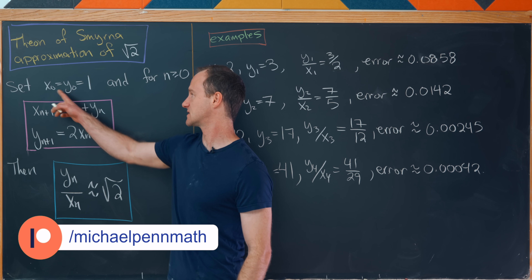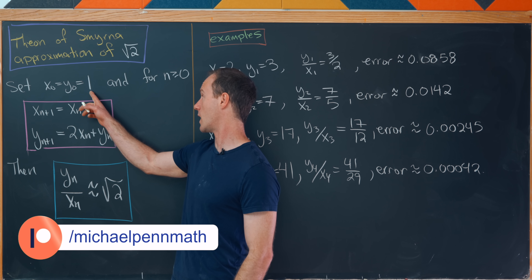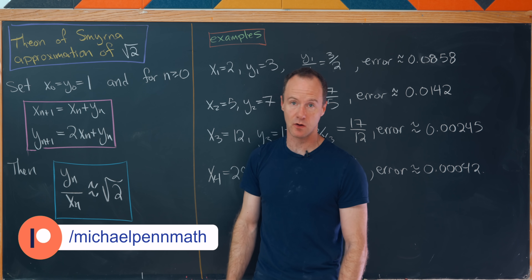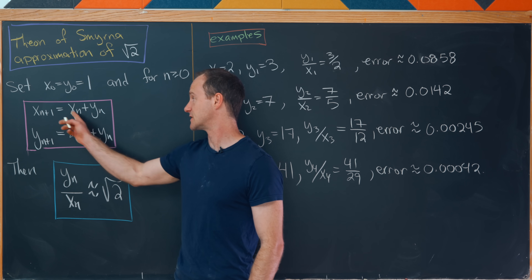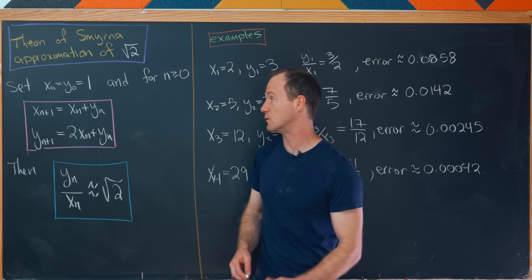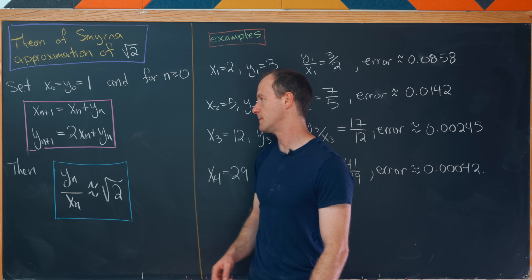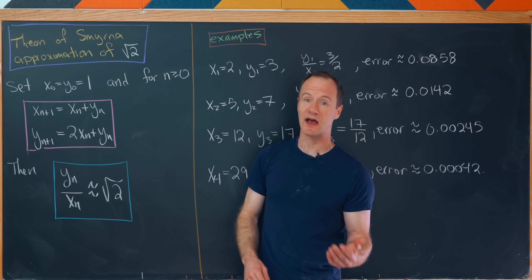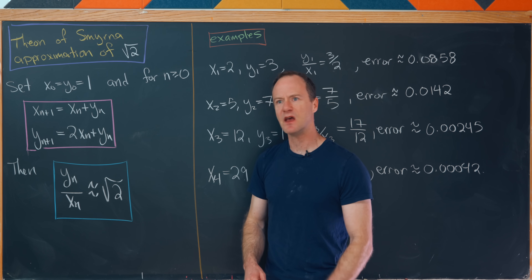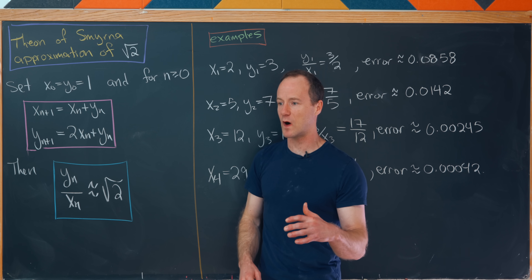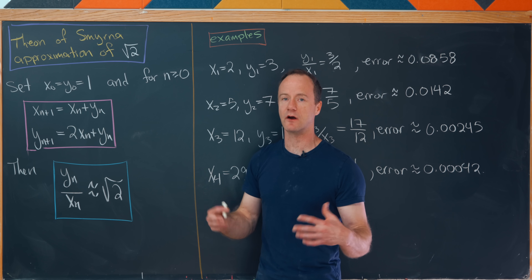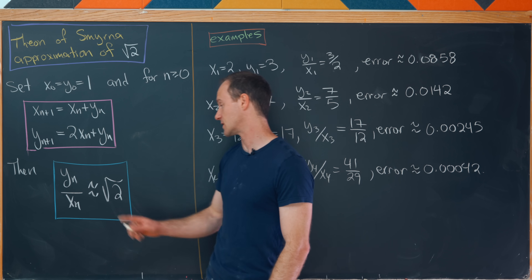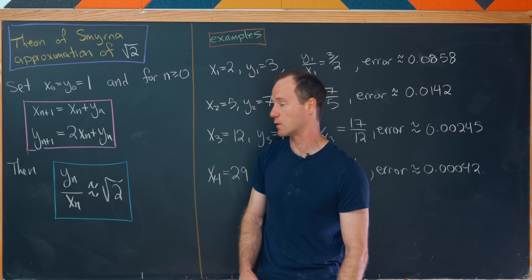Let's set x₀ equal to y₀ equal to 1, and then for n greater than or equal to 0, we'll define xₙ₊₁ to be xₙ plus yₙ, and yₙ₊₁ to be 2xₙ plus yₙ. It's not that xₙ or yₙ on their own approximate the square root of 2 — it's that their quotient approximates the square root of 2.